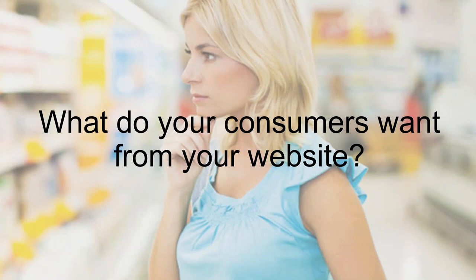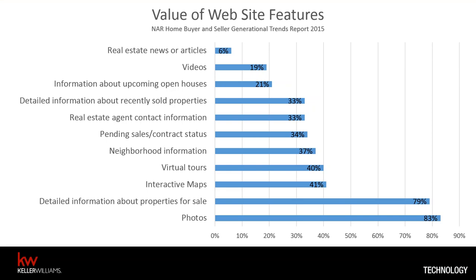In order to lead capture, what do your consumers want from your website? Good website design is all about giving the consumer what they want as quickly as possible. According to NAR's home buyer and seller trends reports, the most important thing — 83% of people want photos: photos of properties, photos of neighborhoods. Every section of your site should be very visual. The next top things people are looking for are detailed information about properties for sale, neighborhood information, virtual tours, and interactive maps — really helping people visualize and understand where they're looking.